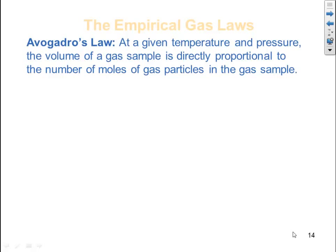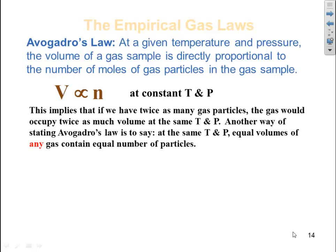Avogadro's law. At a given temperature and pressure, the volume of a gas sample is directly proportional to the number of moles of gas particles in the gas sample. So the volume is proportional to number of moles at constant temperature and pressure. This implies that if we have twice as many gas particles, the gas would occupy twice as much volume at the same temperature and pressure.